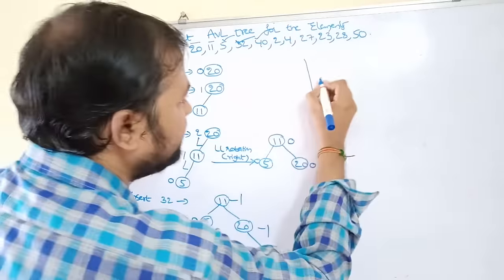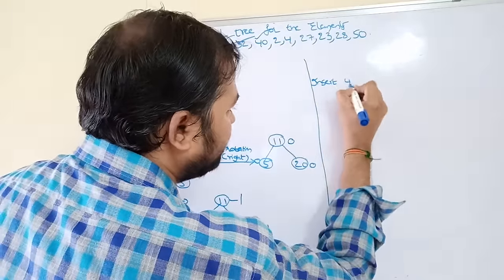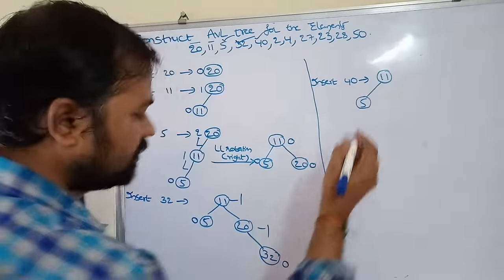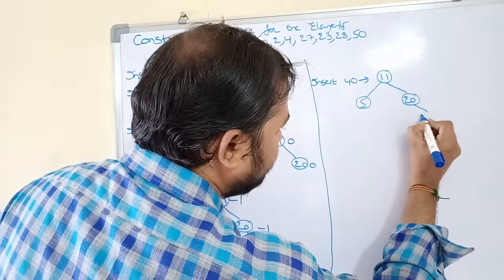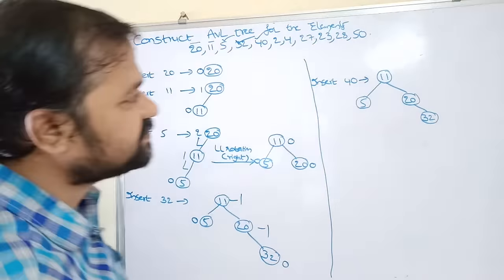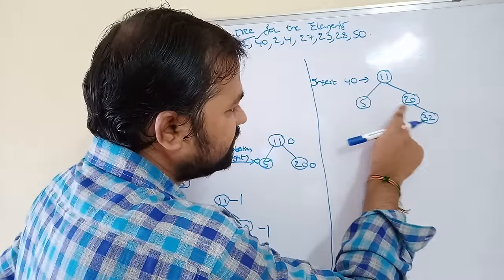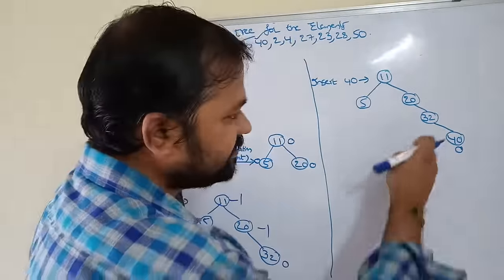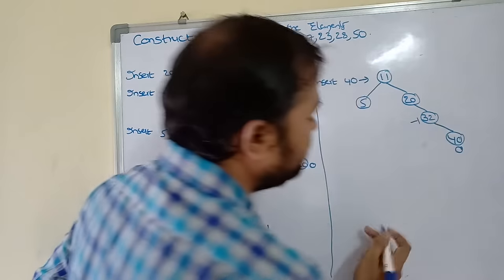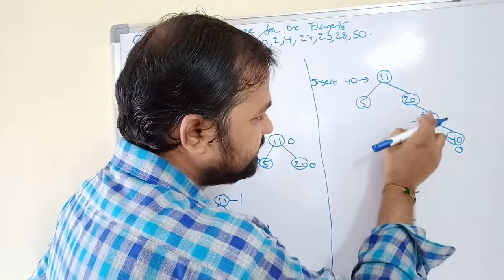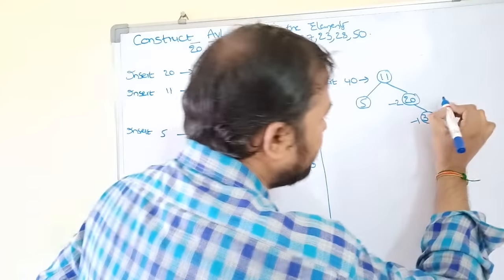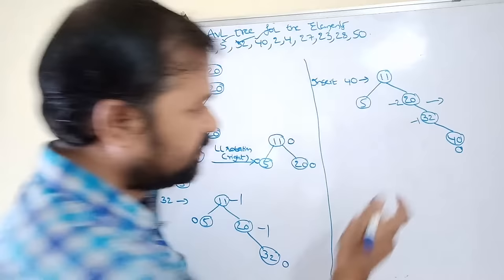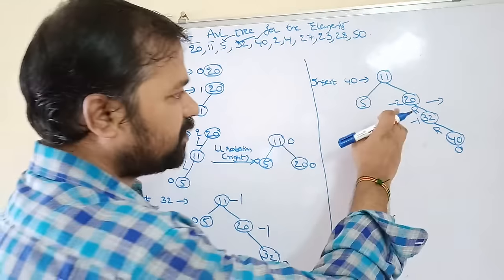Next insert 40. The tree is: root 11, left subtree 5, right subtree 20 with right child 32. 40 is greater than 11, go right. 40 is greater than 20, go right. 40 is greater than 32, go right. Calculate balance factors: for 40 it is 0; for 32 it is 0 minus 1 = -1; for 20 the left subtree is 0 and right subtree is 2, so 0 minus 2 = -2. Node 20 is unbalanced. This is right subtree right child, so we need to perform RR rotation. RR rotation means we perform a left rotation.